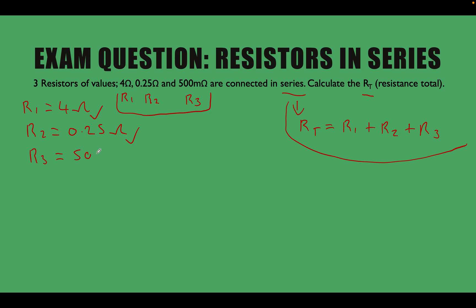R3 equals 500 milliohms. So that's not in the base value yet, so we can't use that one in our calculation. We're going to have to convert that to its base value. If we remember from previous videos, milliohms is equal to minus 3, which is the same as dividing by 1,000.